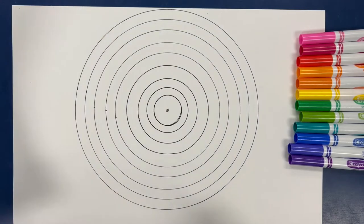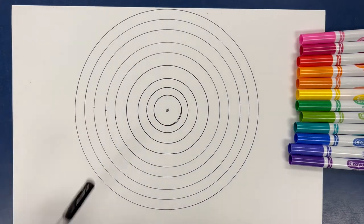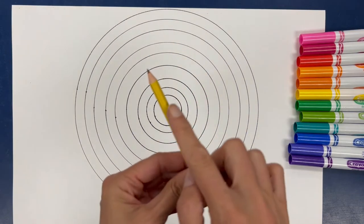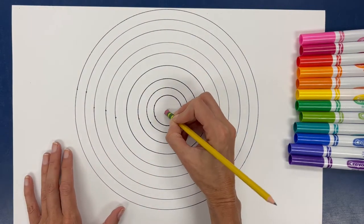Last time we were together we created these concentric circles. I used a Sharpie so you can see them, but in reality you want to use a pencil because we don't want any black dark outlines.